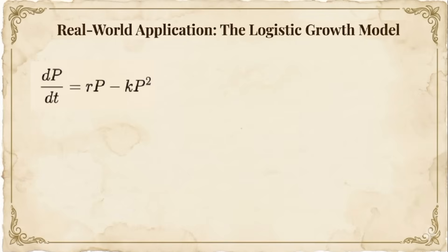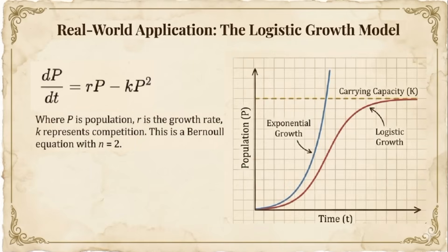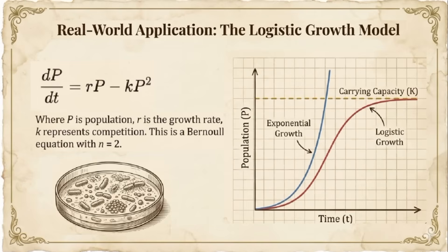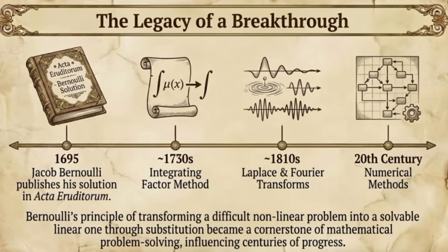Bernoulli equations appear in real-world applications. Consider population growth with limited resources: dP/dt = rP − kP², where P is population, r is growth rate, and k represents competition for resources. This is a Bernoulli equation with n = 2, and its solution yields the logistic growth model — populations grow exponentially at first, then level off as resources become scarce. This same equation models everything from bacterial growth to the spread of information on social media. Jacob Bernoulli's work, published in 1695, showed that clever substitutions could transform seemingly impossible equations into solvable ones — a cornerstone of mathematical problem solving that influenced linear differential equations theory, the integrating factor method, transform methods like Laplace and Fourier, and modern numerical methods.